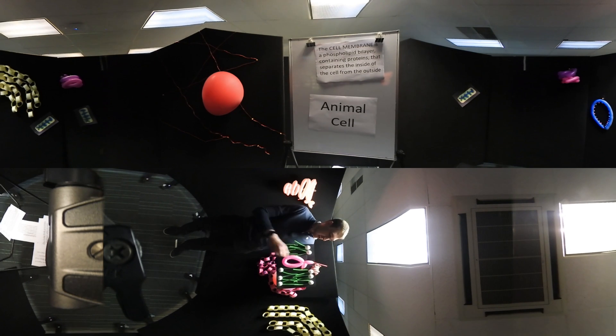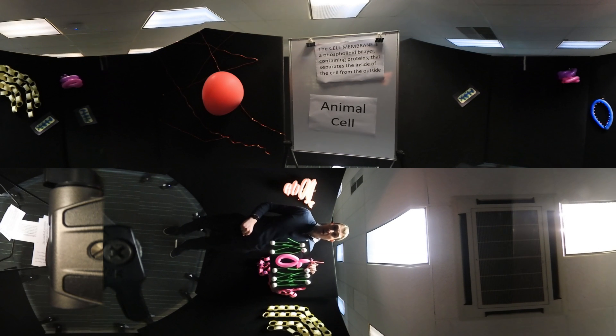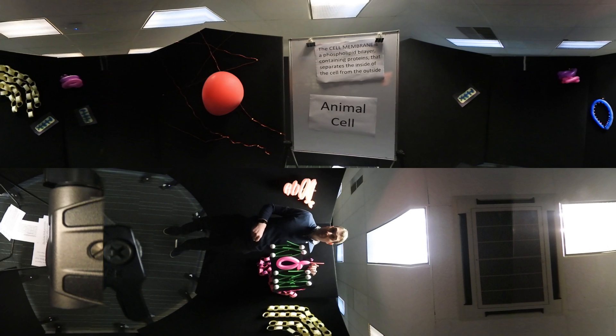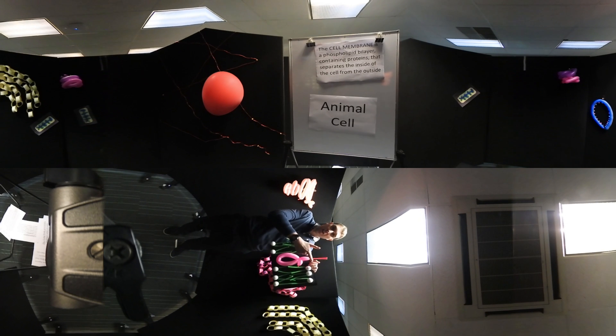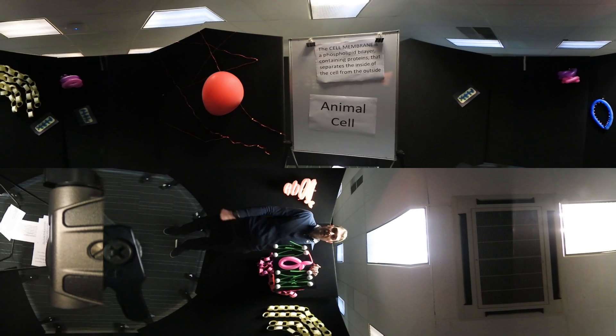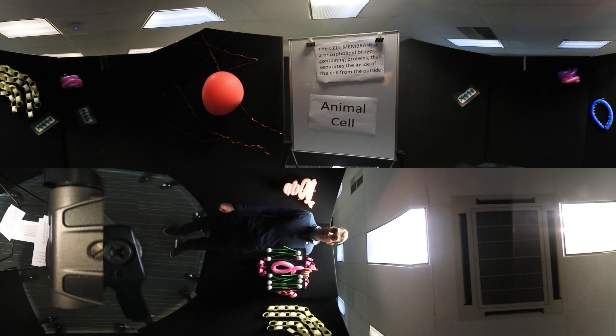Embedded throughout the cell membrane are proteins. They have particular jobs. Some are channels that can allow substances through. Some are pumps which can pump substances from the outside in or inside out. Some are communication. So this one here would be communicating. It could by touching another cell say this cell is touching another cell. So that's the animal cell. Let's have a look at the plant cell now.